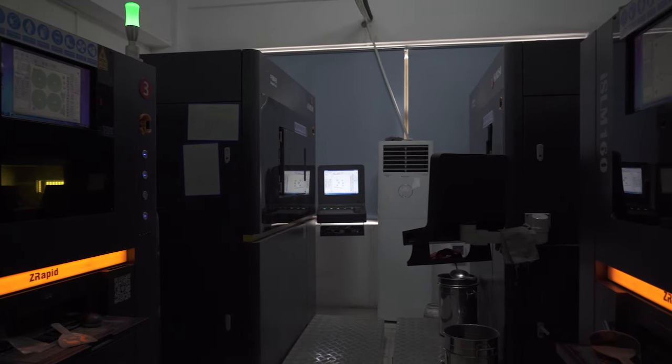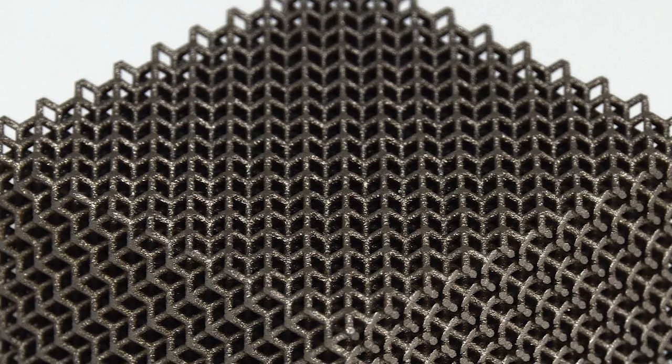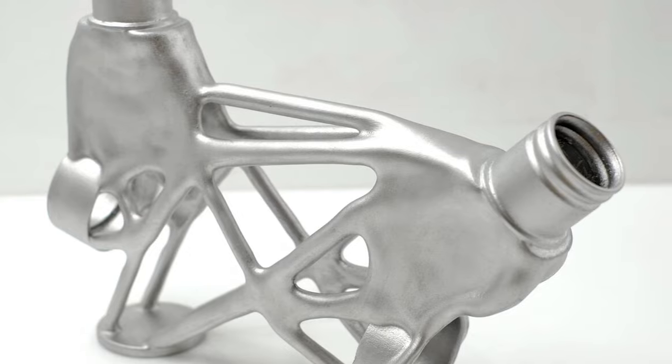With metal 3D printing you can produce functional prototypes and end-use parts with complex geometries. Lattice structures are hollow designs for weight saving applications and other features that would be near impossible to make by other methods.